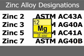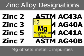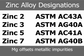Magnesium, in very small amounts, also increases hardness and reduces ductility. Its main purpose is to offset the effects of metallic impurities, particularly lead, cadmium, and tin.